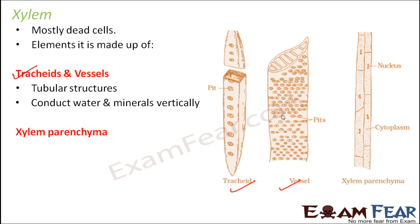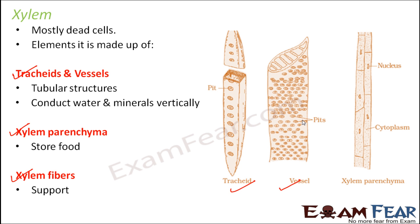The next element is xylem parenchyma. Xylem parenchyma helps in storage of food, which is important because the cells need food to do their job. Then there are xylem fibers, which provide mechanical support to the xylem vessels. So the most important function of xylem — conduction — is performed by tracheids and vessels. In flowering plants, both tracheids and vessels help in conduction, whereas in non-flowering plants, tracheids are more useful.